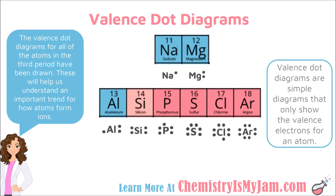This brings us to valence dot diagrams — simple diagrams that only show the valence electrons for an atom. Here I have drawn the valence dot diagrams for all of the elements in the 3rd period on the periodic table. Sodium in group 1 has 1 valence electron; magnesium in group 2 has 2. The number of valence electrons increases by 1 as you go across. The electrons tend to be paired in twos. The metals are shown in blue, nonmetals in pink, and silicon is a metalloid.